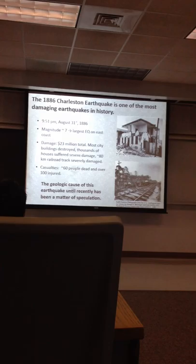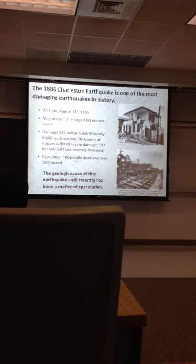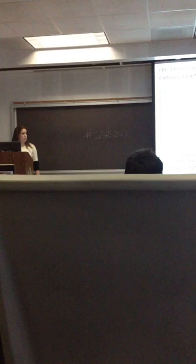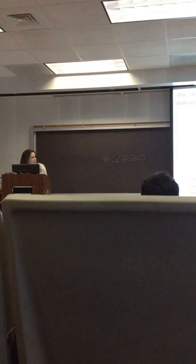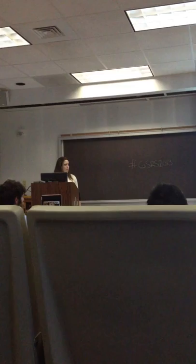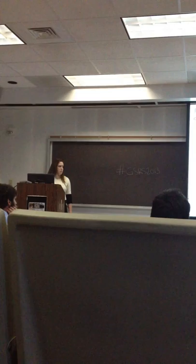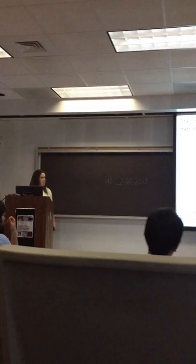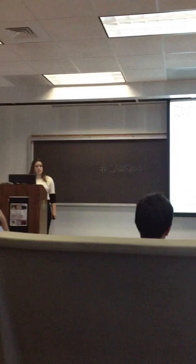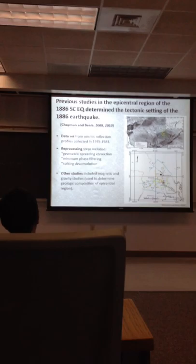I want to start by talking about the 1886 Charleston earthquake. The reason it is so important, even though it happened a long time ago, is that if it happened again today in the same place with the same magnitude, it would be the most devastating earthquake on record in terms of financial loss. The magnitude was about seven — the largest earthquake on the East Coast as of now. The damage was 23 million dollars total in 1886, which would translate to probably several billion dollars today. The main point is that its geologic cause and tectonic setting have been pretty uncertain until recently.